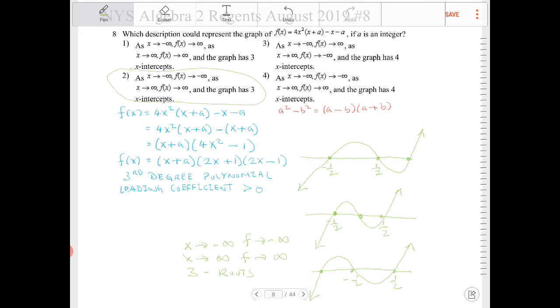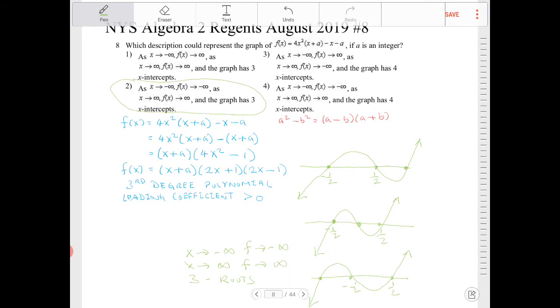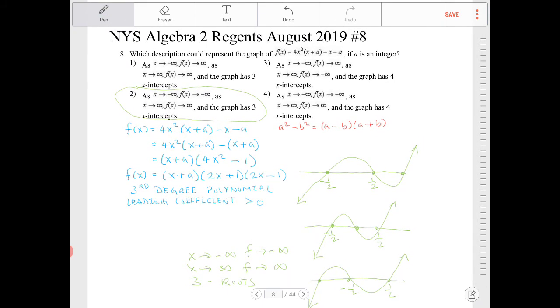So as x approaches negative infinity, f will approach negative infinity. As x approaches positive infinity, f will approach positive infinity. And the graph has three x-intercepts.